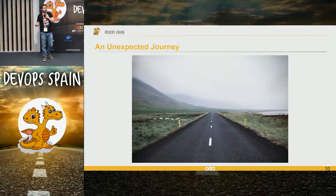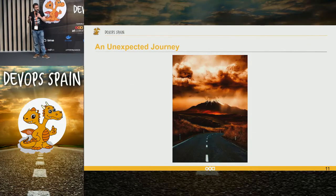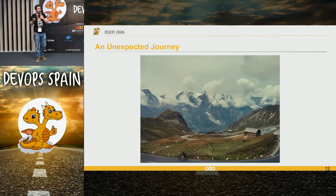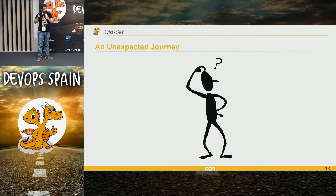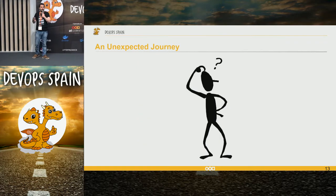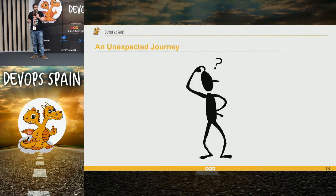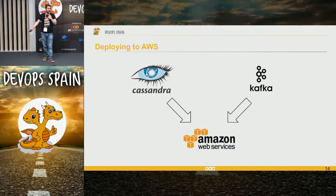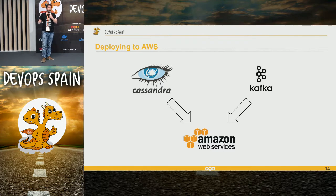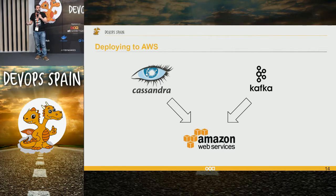It hasn't been an easy journey, but it hasn't been a road to hell either. There were challenges, but we overcame them. The first thing I had to do when I joined was install Kafka and Cassandra on AWS, with some constraints: I had to do it with infrastructure as code and couldn't tie myself to vendor tools — so no Amazon CLI or things like that. I had no clue how to do it, since it was my first time doing something like that.